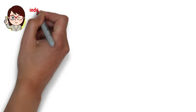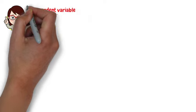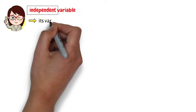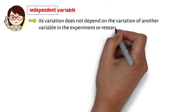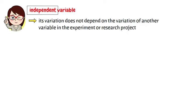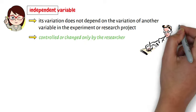As we can see, the independent variable is called independent because its variation does not depend on the variation of another variable in the experiment or research project. In fact, the independent variable is controlled or changed only by the researcher.